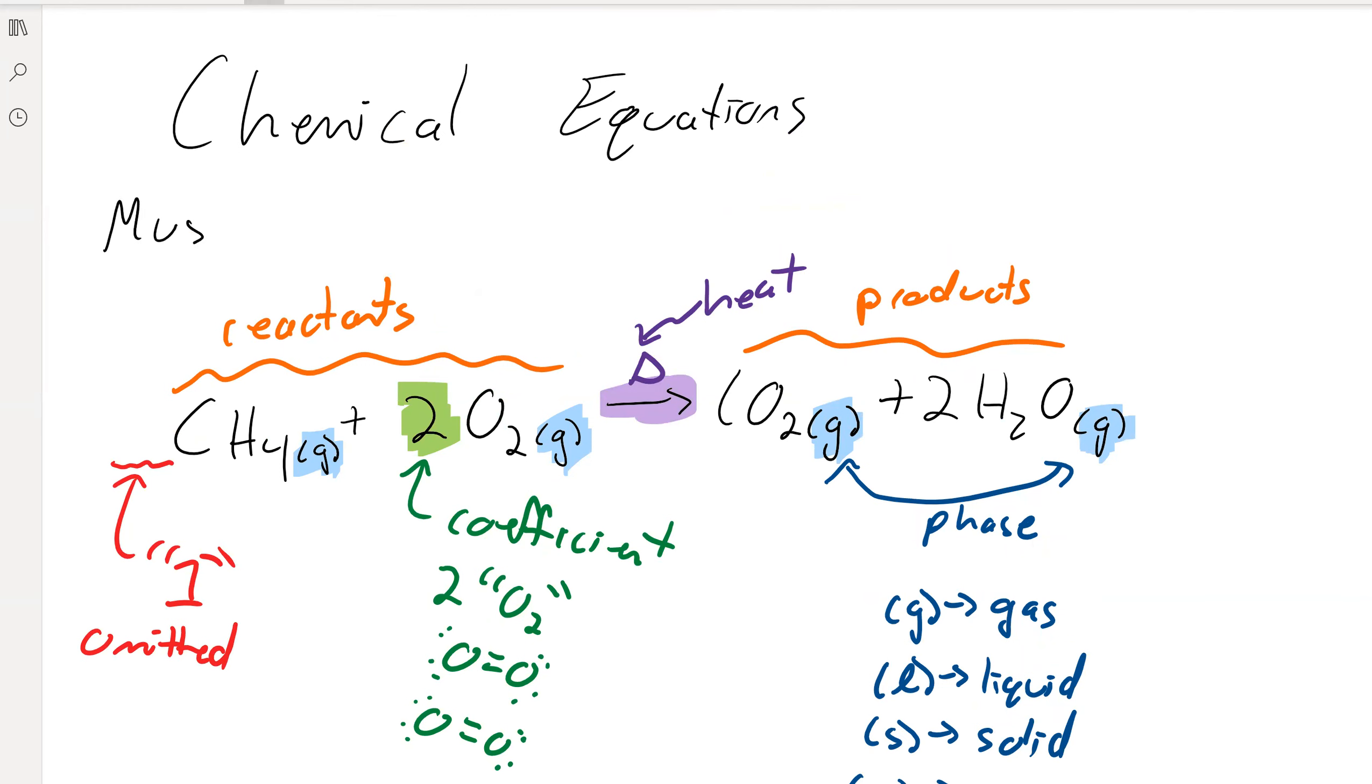And the key thing with equations and chemical equations is that they must be balanced. And what that means is that everything on the left side must appear on the right side. We cannot create nor destroy matter; we can just rearrange it. So for every atom that exists on the left, the same atom must exist on the right.